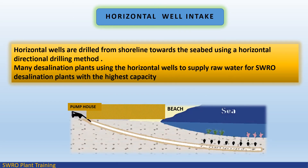Horizontal wells are drilled from the shoreline towards the seabed using a horizontal directional drilling method. Many desalination plants use horizontal wells to supply raw water for seawater reverse osmosis desalination plants with the highest capacity.